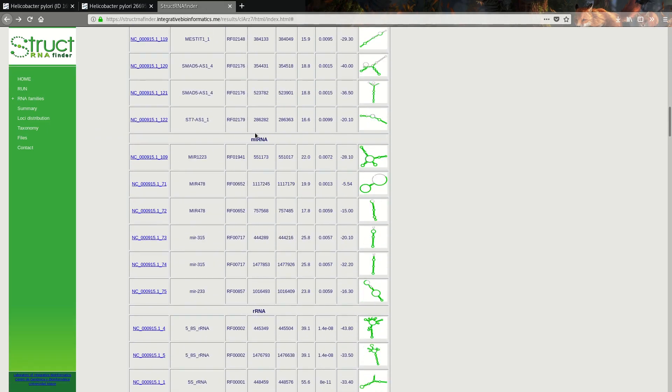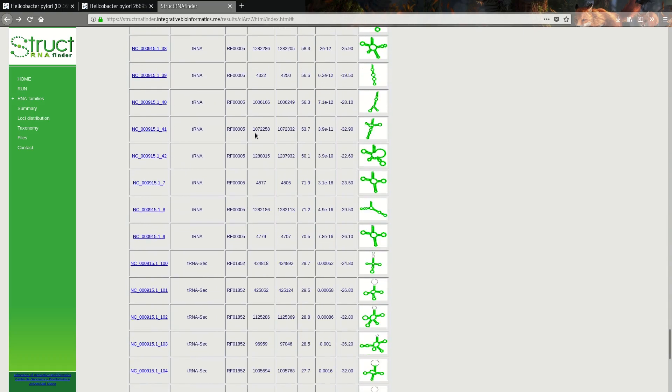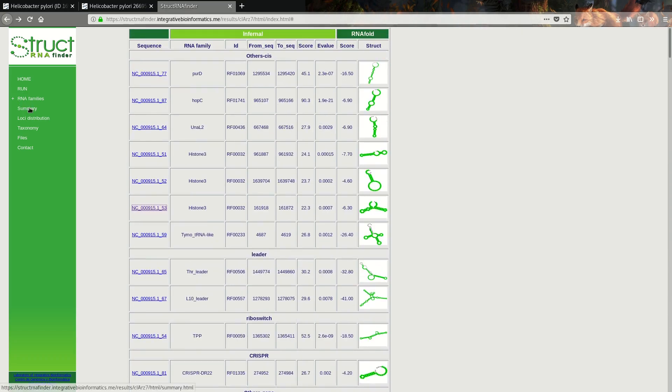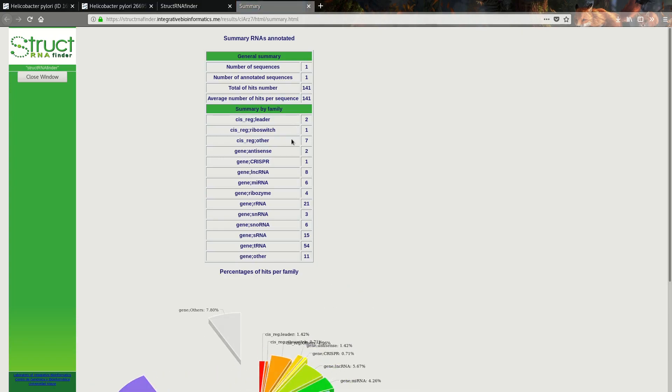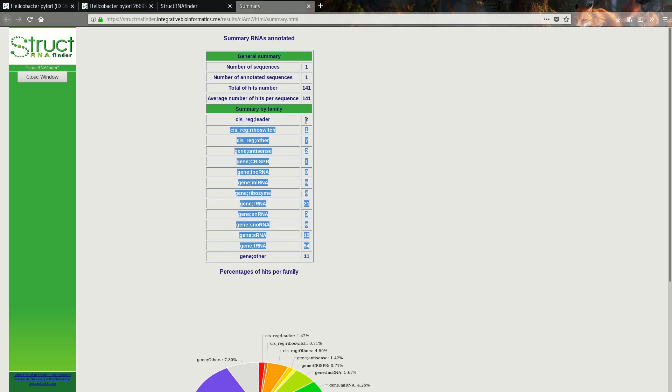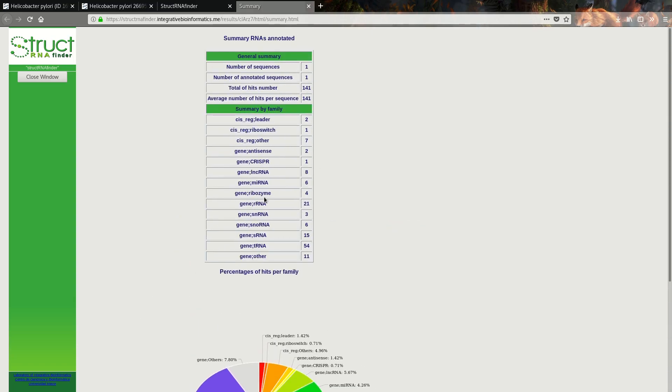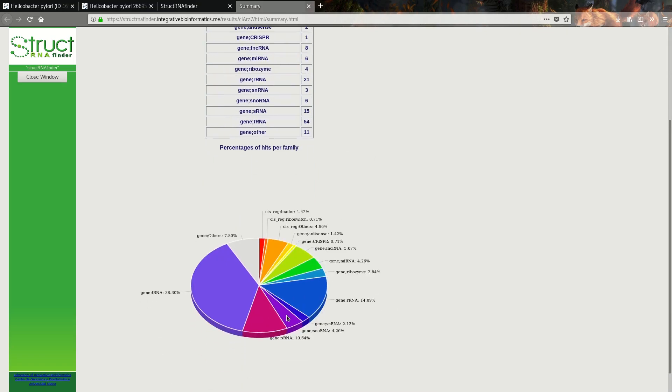As you can see, many sequences have been found in the Helicobacter pylori genome. If we want a short summary, we go to summary. You see we submitted one sequence with 141 hits, all the families, and the amount of RNAs in those families according to the alignment. This is a graphical representation - tRNA has 54 hits, which is 38.30% of the total.